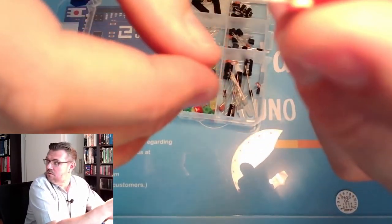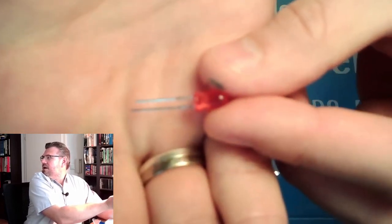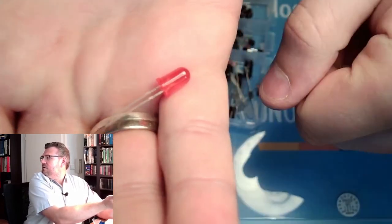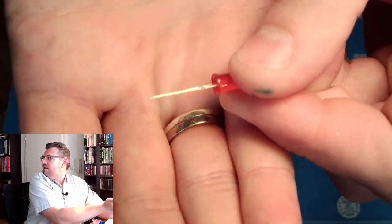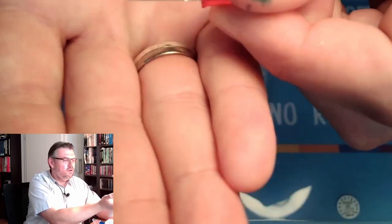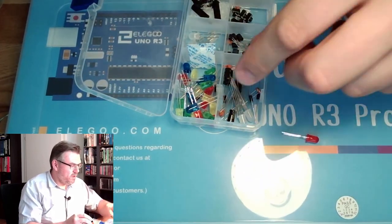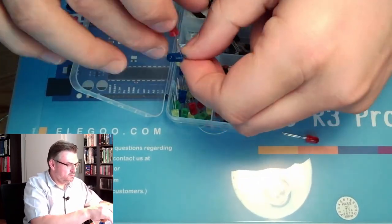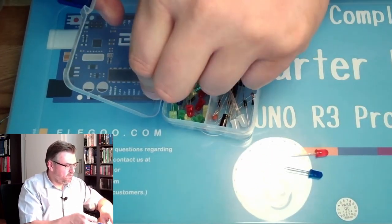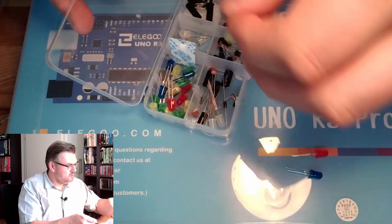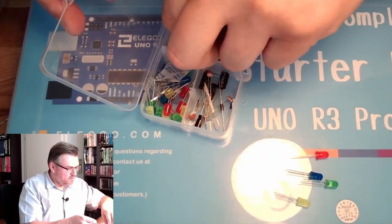These are diodes. This is a light emitting diode, this little thing. 5mm in diameter, typical 5mm LED. Do you see there is a long leg and a short leg? You have the red ones, you have the blue ones. They all look pretty much the same. You have the yellow ones. There are green ones, the white ones.